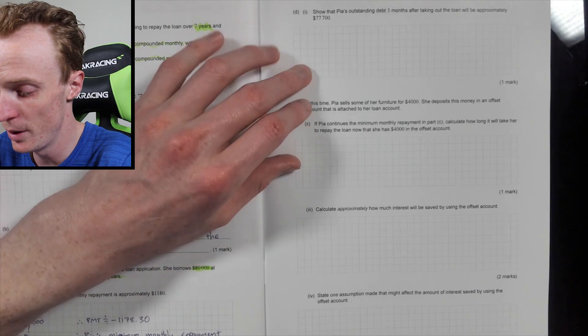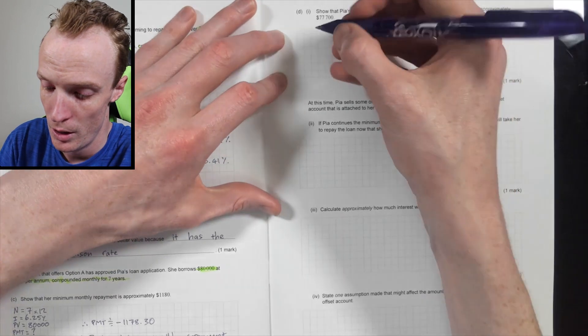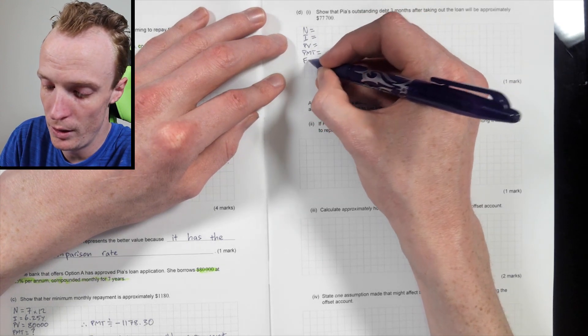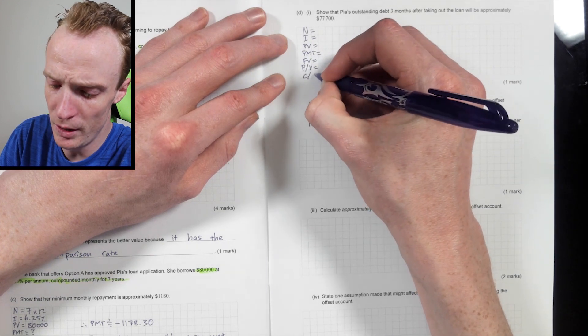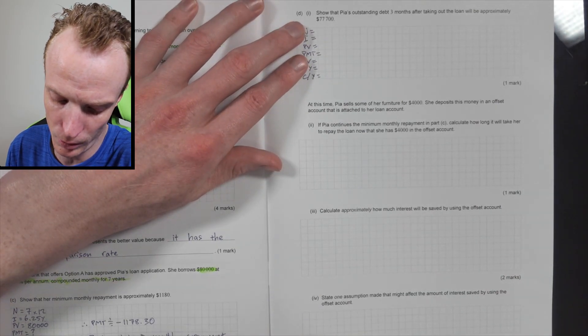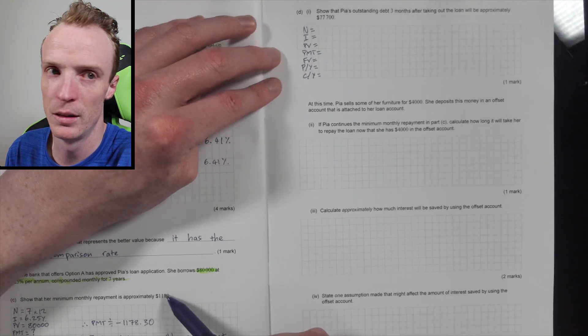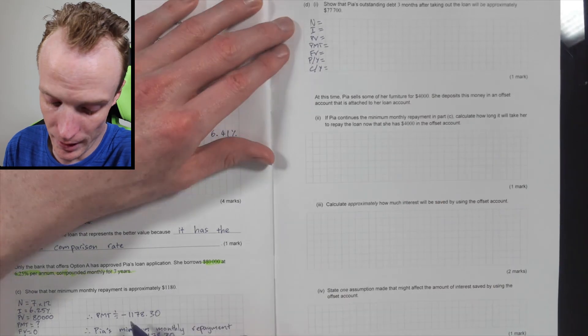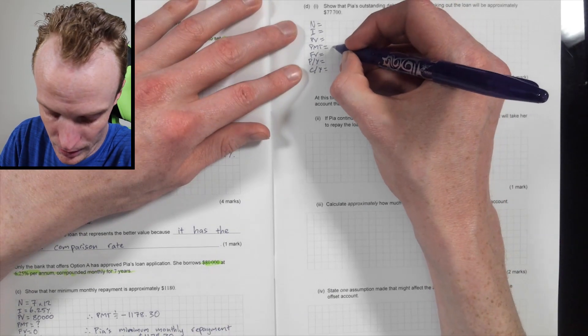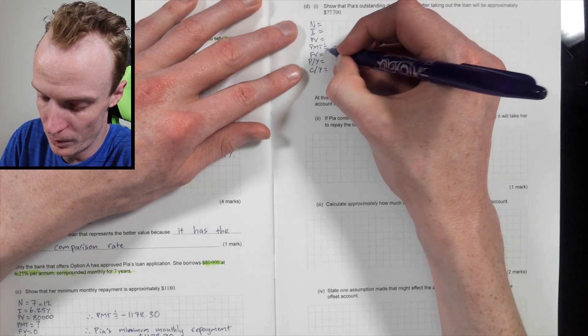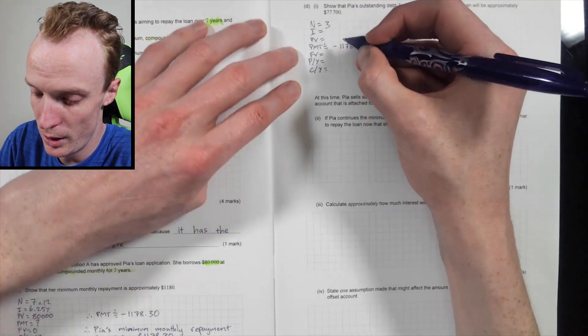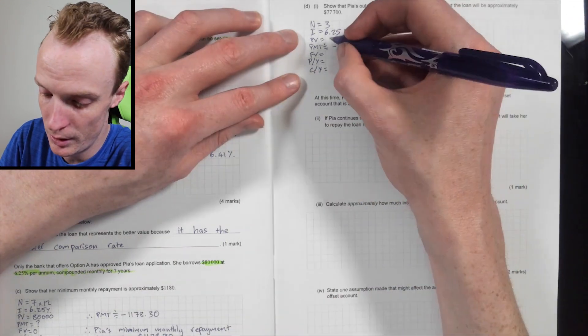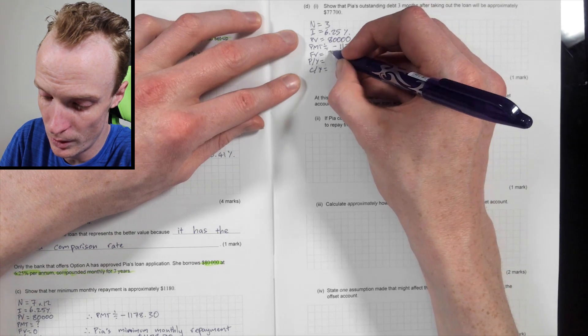So now show the Pia's outstanding debt three months after taking out the loan will be approximately this. Well, that's just one of these again. So N I PV PMT, FV, PY and CY. Now the big thing about this is probably just understanding that if you weren't able to get this value, close to this, use the value here. Don't not use a value and just not answer this question. Just use the one that it gave you here. If you couldn't get something anywhere near close to it, if you did get close to it, just use this because that's what I've got. So the PMT in this case is negative 1,178.30. I'm going to indicate that's an approximate. The N is three months. So it would just be three. The interest rate, that was 6.25%. The present value, that was my 80,000.